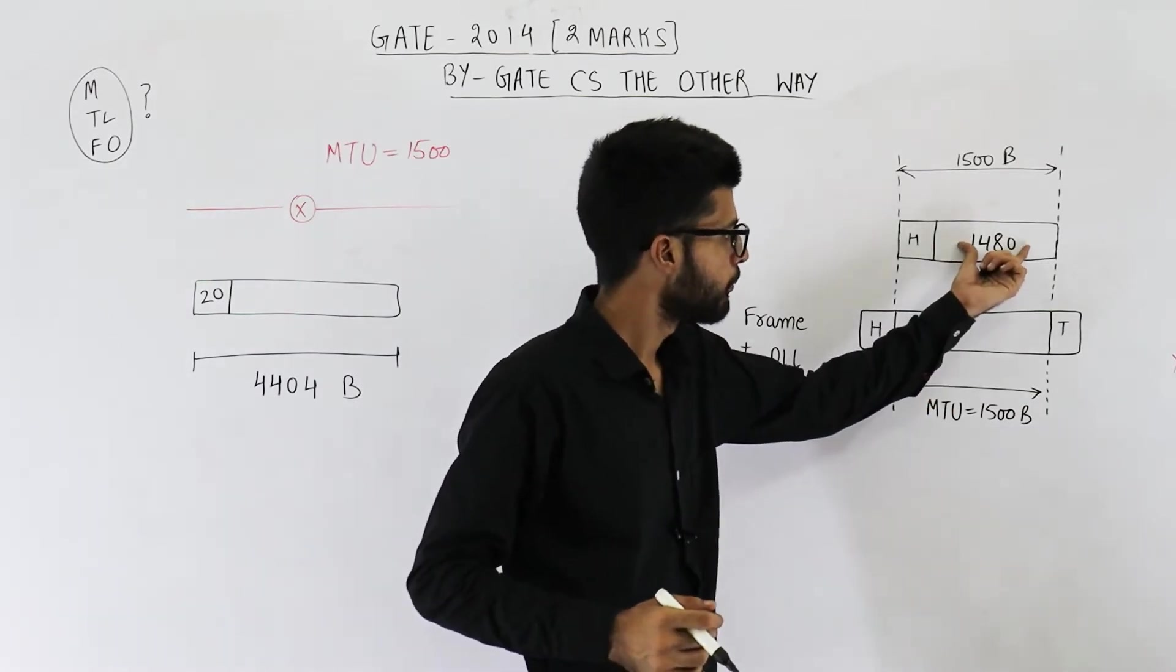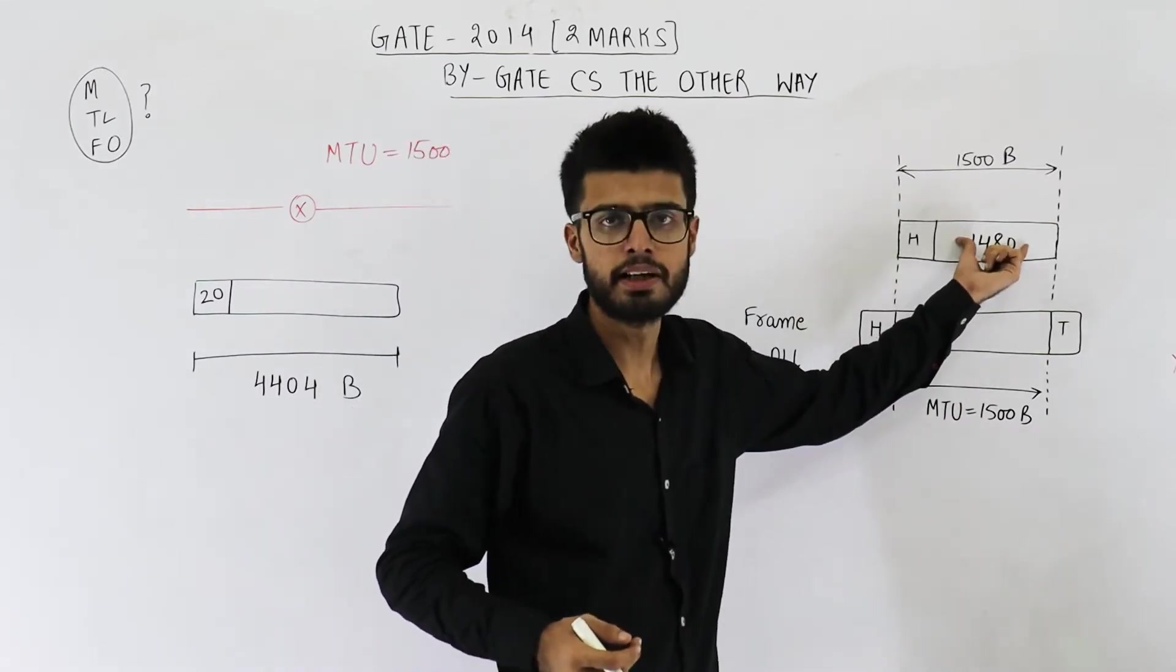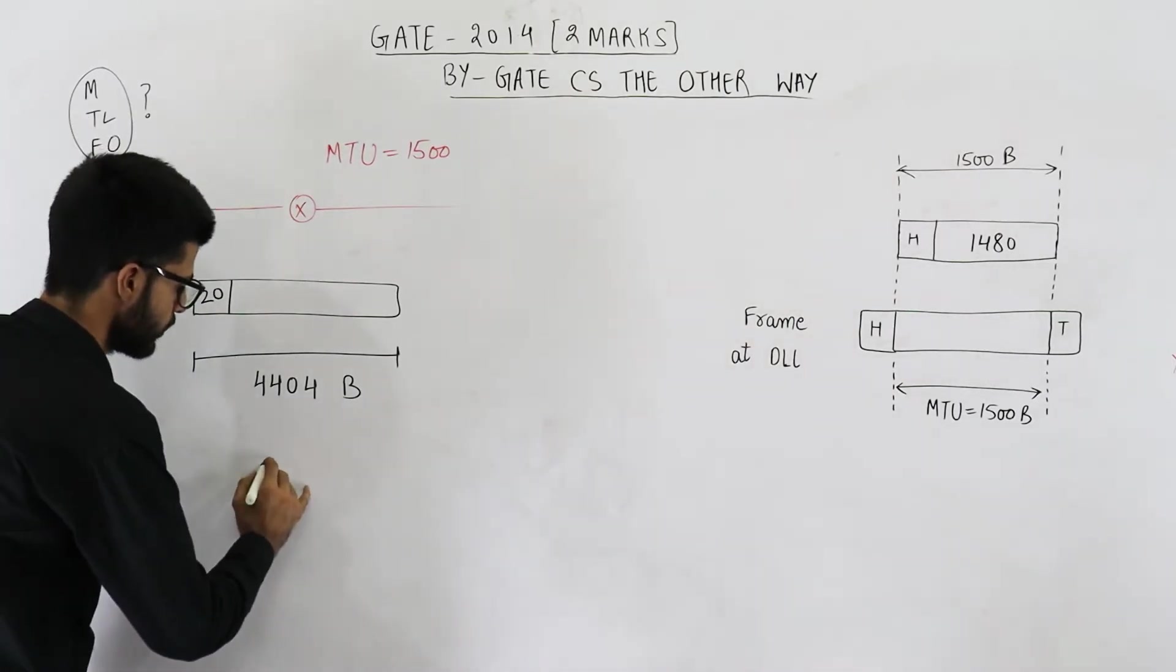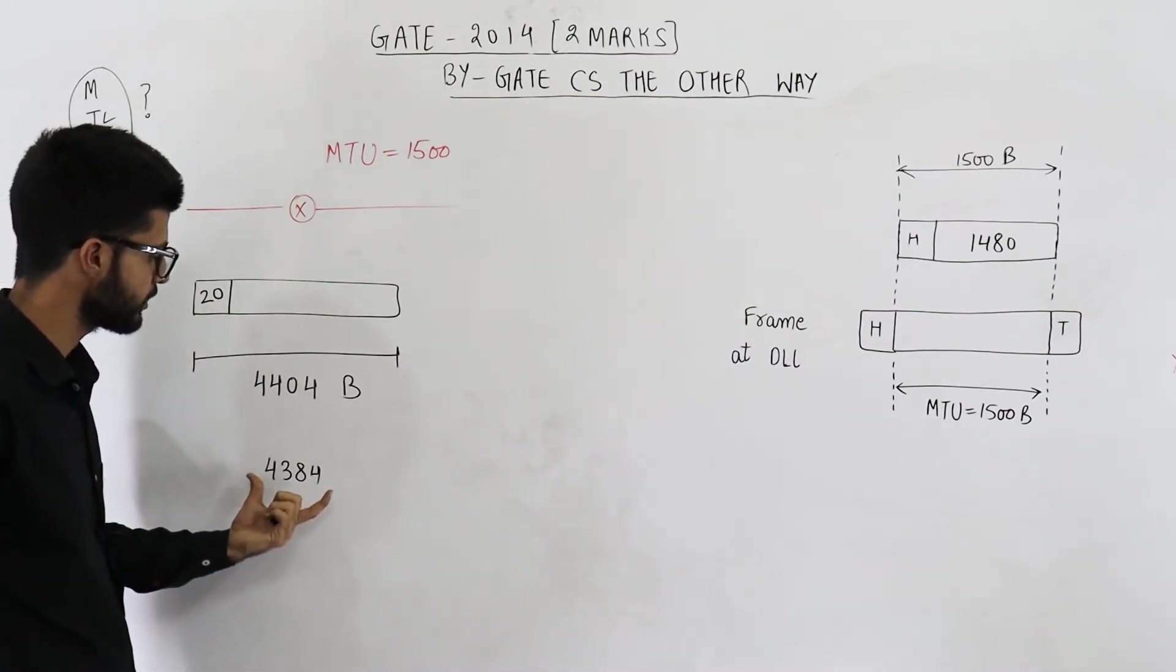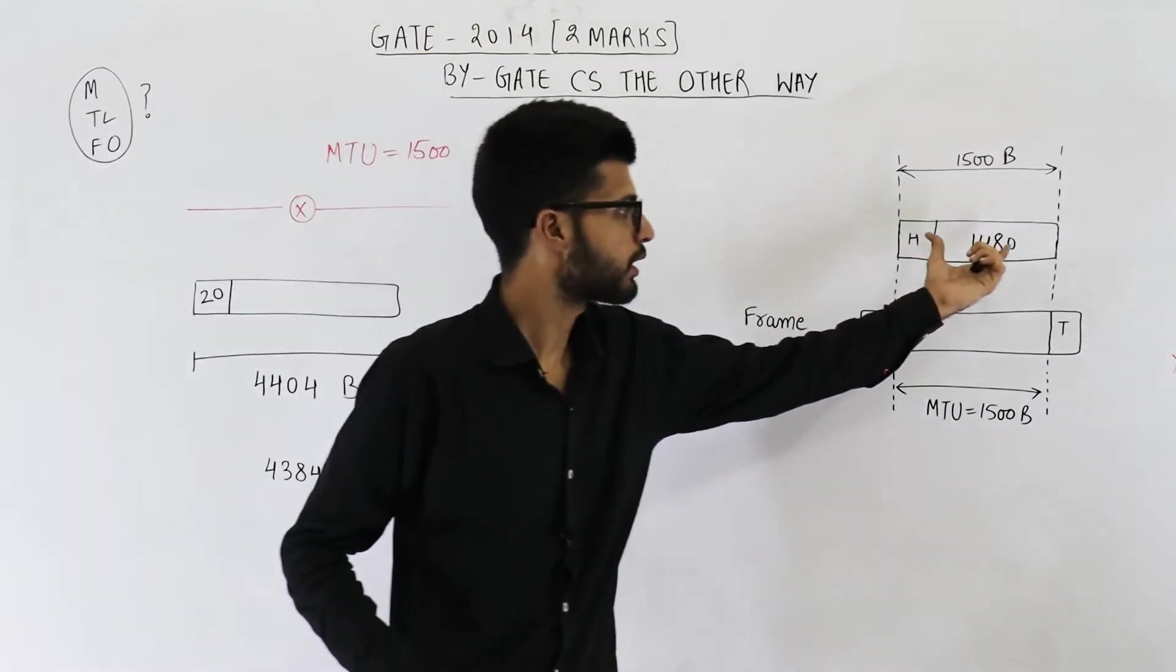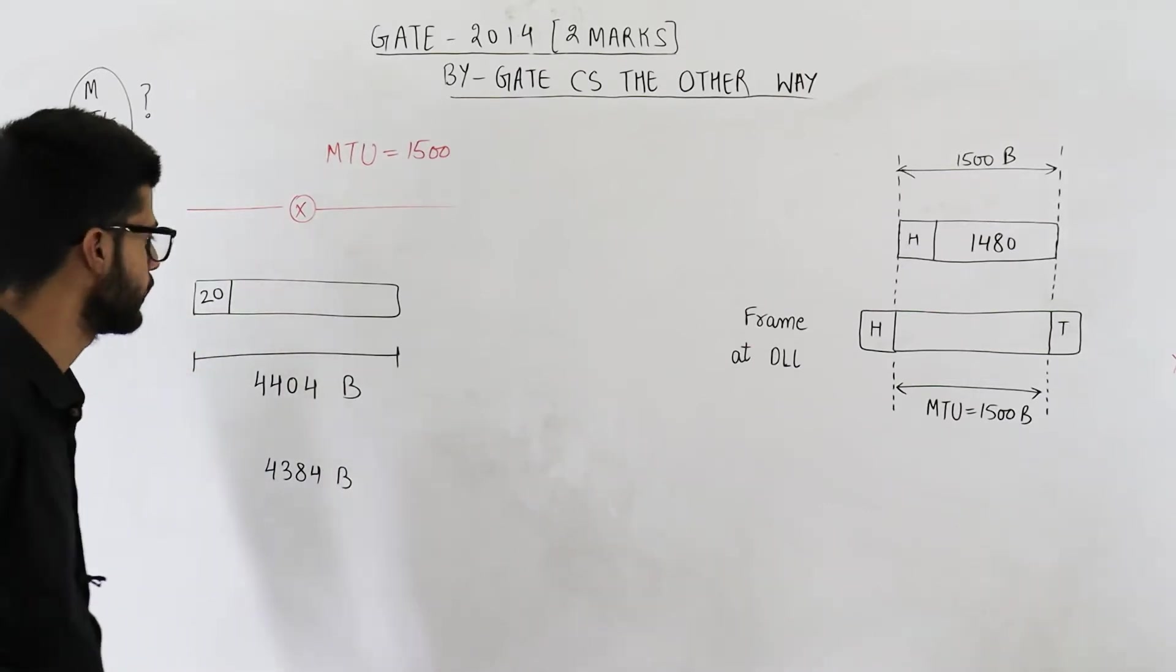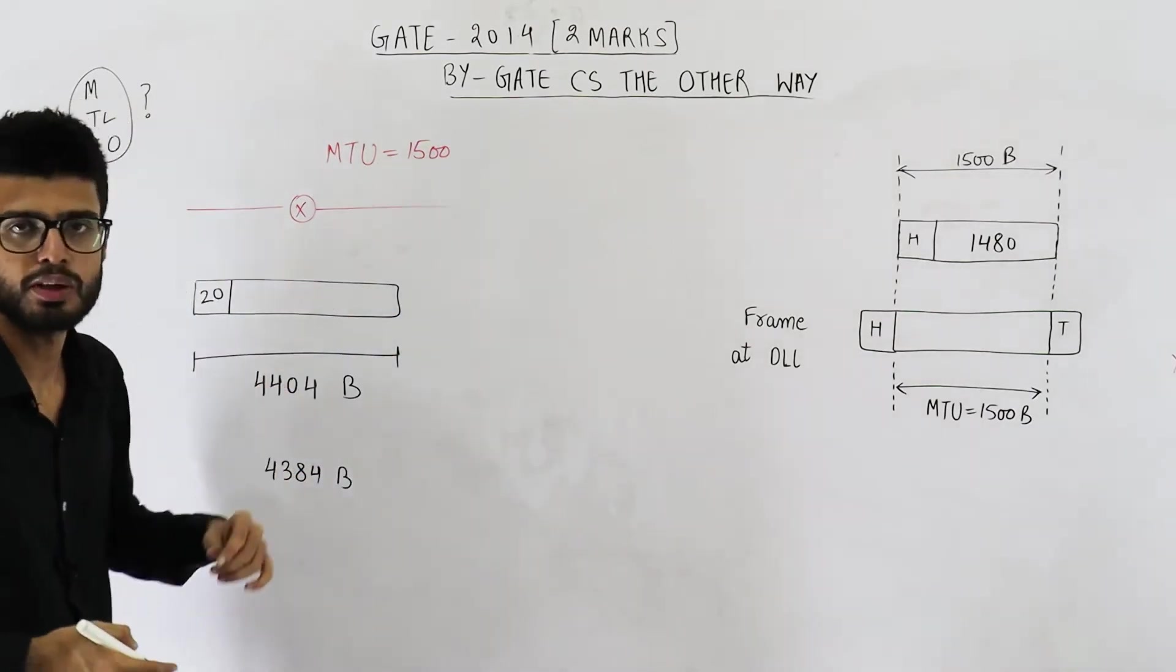Now see, maximum data that can be present inside the IP datagram is 1480. But the datagram which this router has received contains 4384 bytes. This is the total size minus 20 bytes of header. That means these many bytes of data is present inside this datagram. This is more than what the limitation is. That means this router will fragment this datagram. It will create smaller parts and then it will be transmitted on the network whose MTU is 1500.